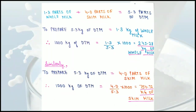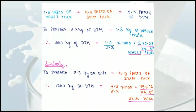Using the unitary method: for 5.3 kg of double toned milk, 1.3 kg of whole milk is needed. So for 1000 kg: (1.3 / 5.3) × 1000 = 245.28 kg of whole milk. Similarly, for skim milk: (4.0 / 5.3) × 1000 = 754.72 kg of skim milk.